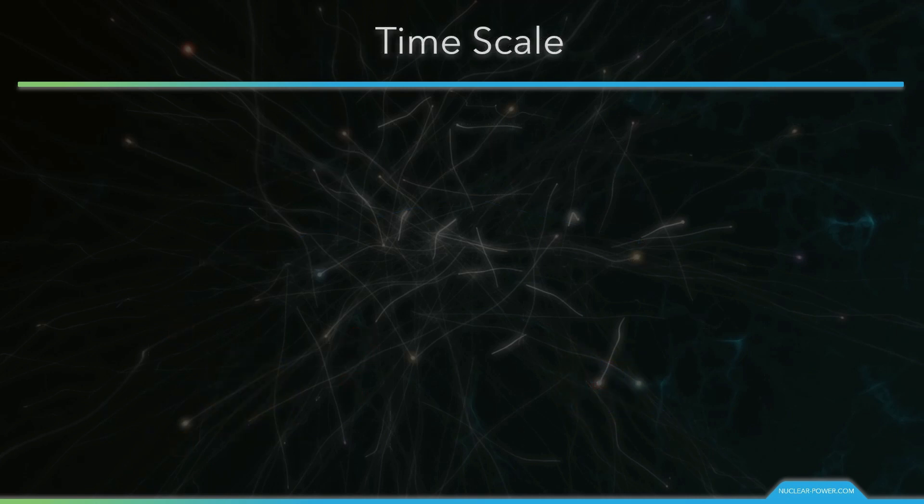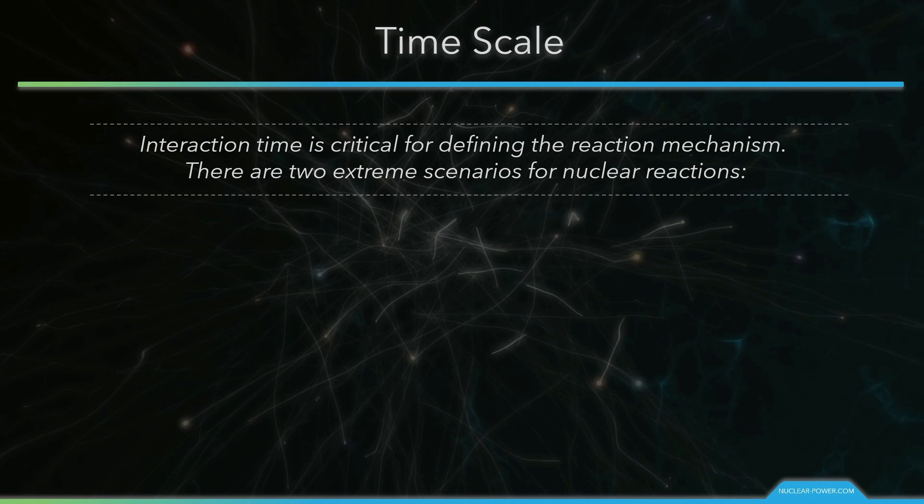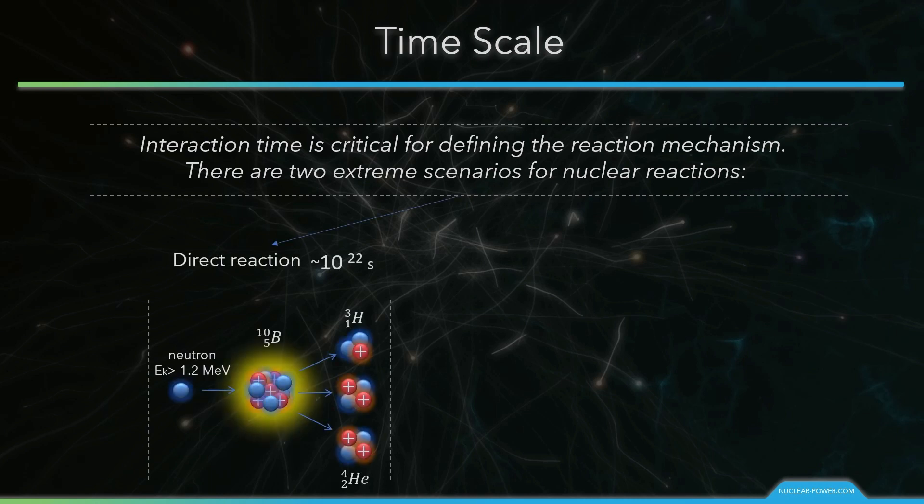To understand the nature of nuclear reactions, the classification according to the timescale of these reactions has to be introduced. Interaction time is critical for defining the reaction mechanism. There are two extreme scenarios for nuclear reactions: direct nuclear reactions and compound nucleus reactions.